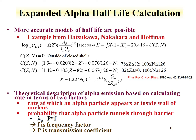The Geiger-Nuttall relationship is a very simple and straightforward model to describe alpha decay and half-life. There are models that can be more accurate and take into account closed-shell information — an example is the Hatsukawa model. This model includes corrections for how close or far one is from shell parameters, with Z-dependence and relationships between the daughter A, the Q value of the alpha, and the A of the daughter — similar relationships to those reflected in the Geiger-Nuttall law.